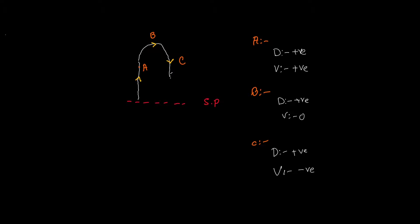The object continues moving downwards and reaches the starting position. Let's call this point D. At point D, displacement is zero because the object is placed exactly on the starting point. Velocity at D is still negative, just like at point C, because the object is still continuing to move downwards.